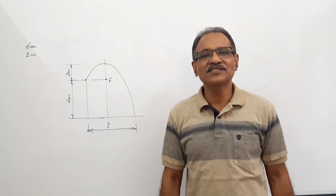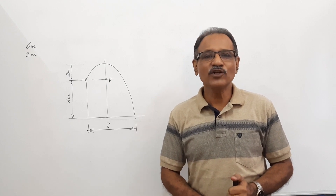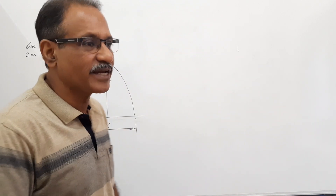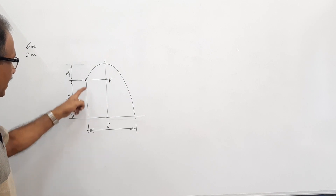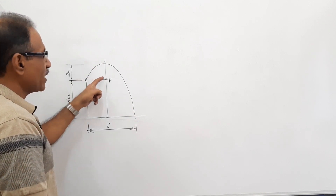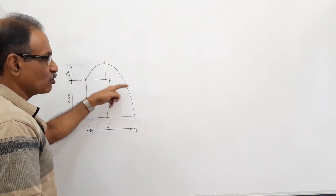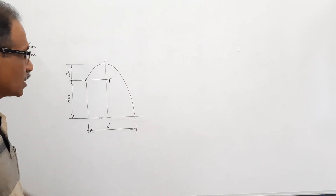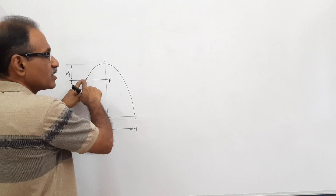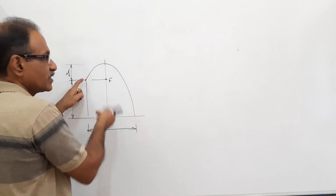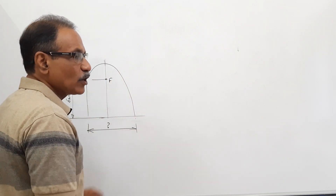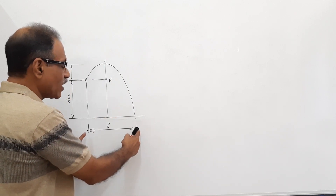Welcome to Engineering Graphics, I am Dr. Vinod Kumar. We are going to draw a very interesting question today. A ball is thrown from the top of a building six meters tall. It goes up by two meters and then falls to the ground tracing a parabolic path. The ball reaches a height of eight meters from the ground, then traces a parabolic path and reaches the ground. You are asked to trace this path and find out how far away the ball lands.